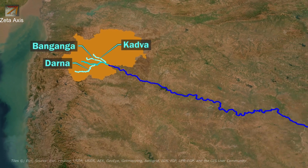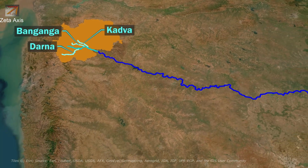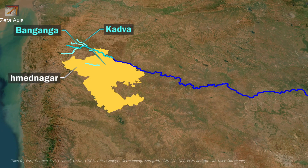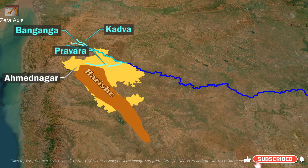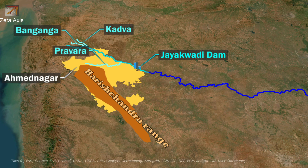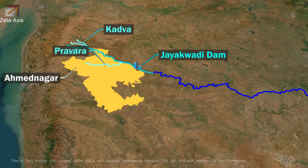Godavari from Nasik enters Ahmednagar, where Pravara River meets Godavari. Pravara River rises and flows within Ahmednagar district and originates from the Harishchandra range. Within Aurangabad, Jayakwadi Dam is constructed on Godavari River.